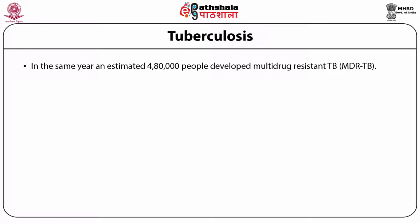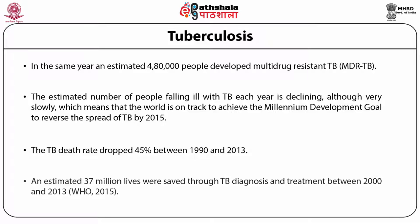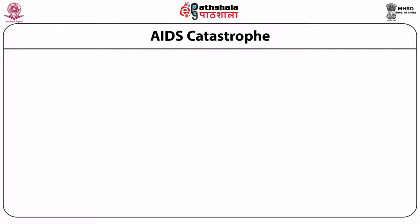In the same year, an estimated 480,000 people developed multi-drug resistance TB (MDR-TB). The estimated number of people falling ill with TB each year is declining, although very slowly, meaning the world is on track to achieve the millennium development goal to reverse the spread of TB by 2015. The TB death rate dropped 45% between 1990 and 2013, and an estimated 37 million lives were saved through TB diagnosis and treatment between 2000 and 2013.